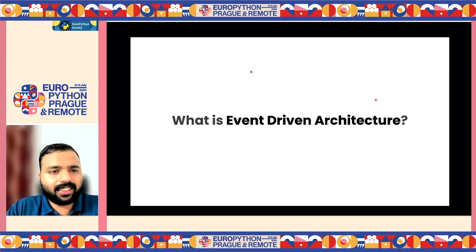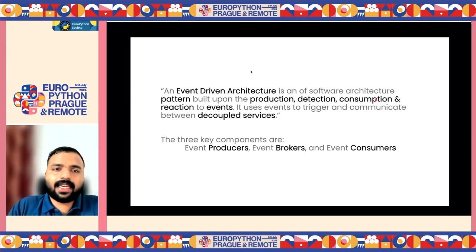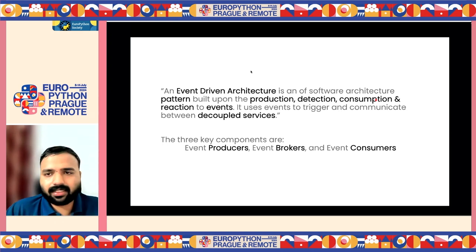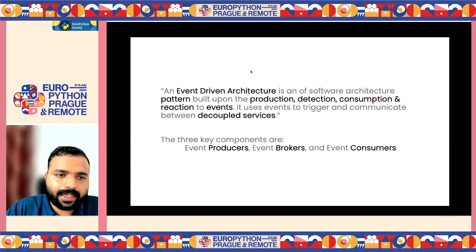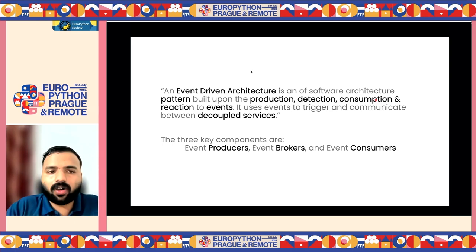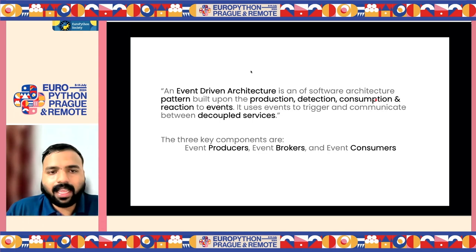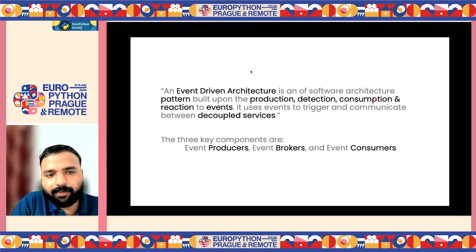What is event-driven architecture? It's a software architecture pattern built upon production, detection, consumption, and reaction to events. It uses events to trigger and communicate between multiple decoupled services. There are three main components. Event producers are services that create and generate events signaling a state change, and they inform the event broker. The event broker is the orchestration layer handling all consumption, tracking requests, producers, and consumers. Some brokers like Kafka or NATS JetStream have persistence, so we can replay events from start to end.